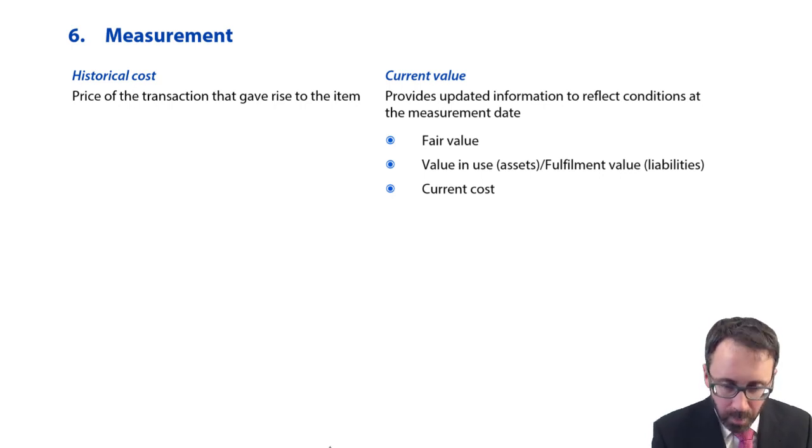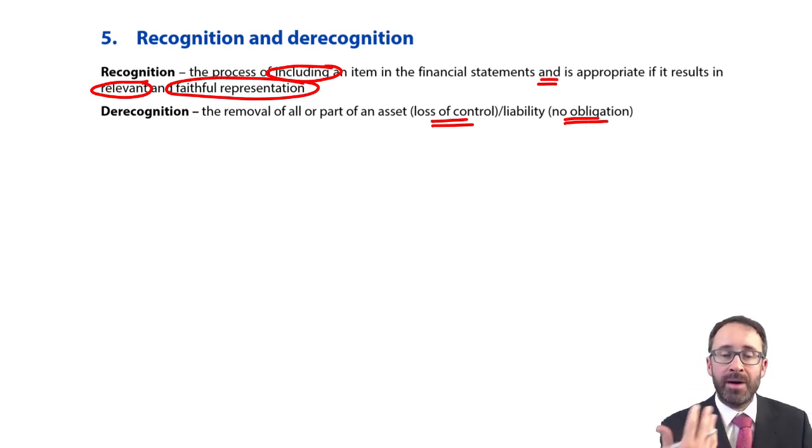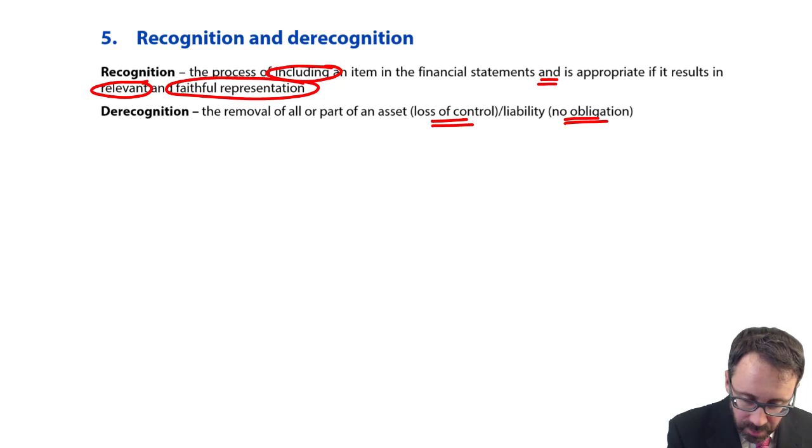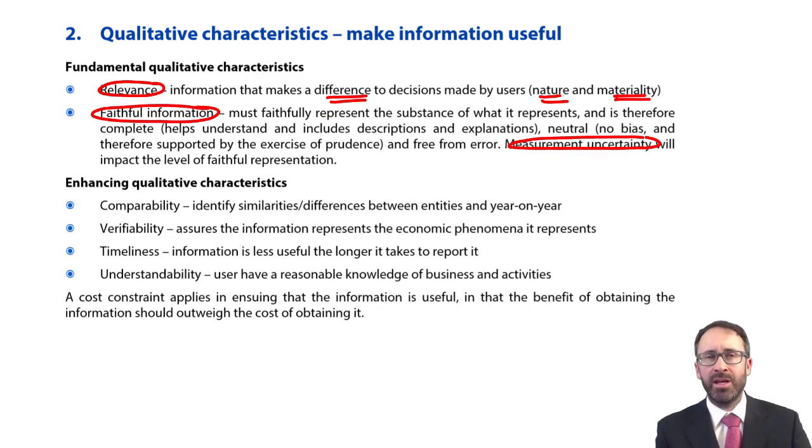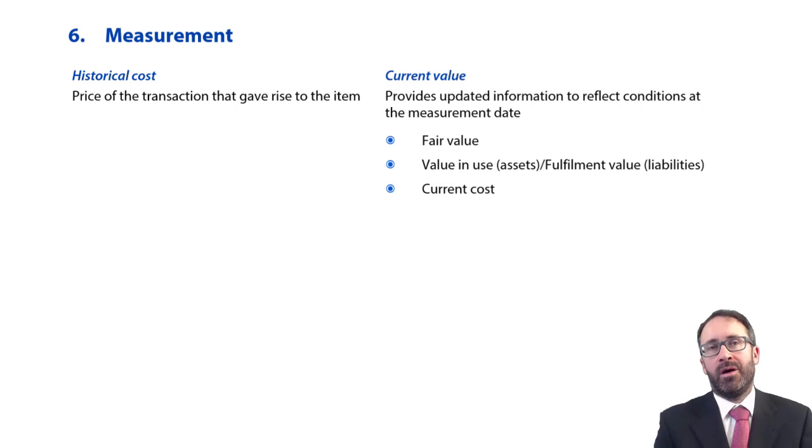We have to have fundamental criteria that define how we measure an asset and a liability. Let's go back. The recognition criteria was all about faithful representation, about it being relevant. Remember within that was mentioning faithful representation about measurement uncertainty. Relevance was all about materiality. So we need to make sure that we have a strong measurement basis to be able to put appropriate numbers within the values of our assets and liabilities.